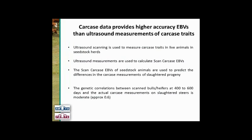Carcass data does provide higher accuracy EBVs than ultrasound measurements. Ultrasound scanning is used to measure carcass traits in live animals in seed stock herds, which is why it's so valuable, and those measurements are used to calculate scan carcass EBVs, which then predict differences in carcass measurements of slaughtered progeny. However, scan carcass EBVs do not have a correlation of 1 with actual carcass EBVs — the correlation is around 0.6. They're very good predictors, but you will never get the same accuracy from scan data as from carcass data.